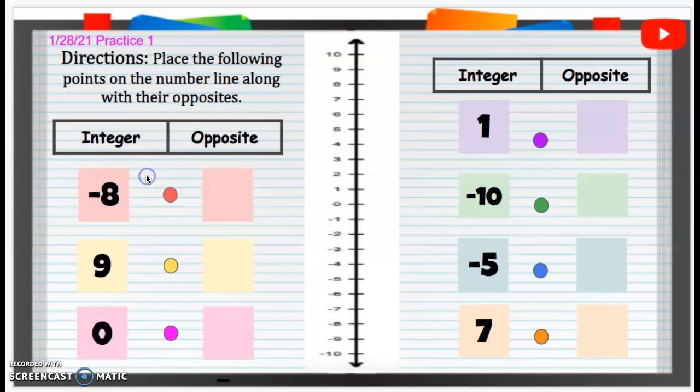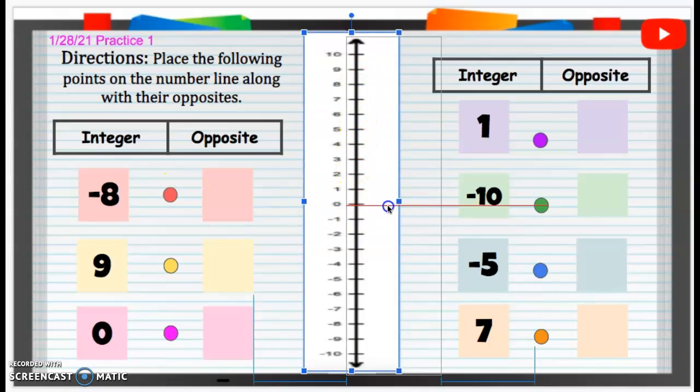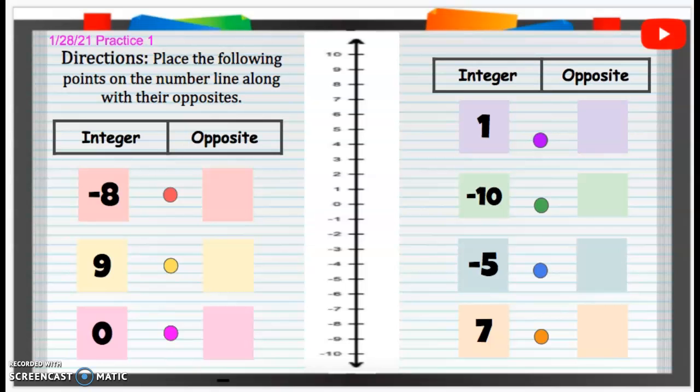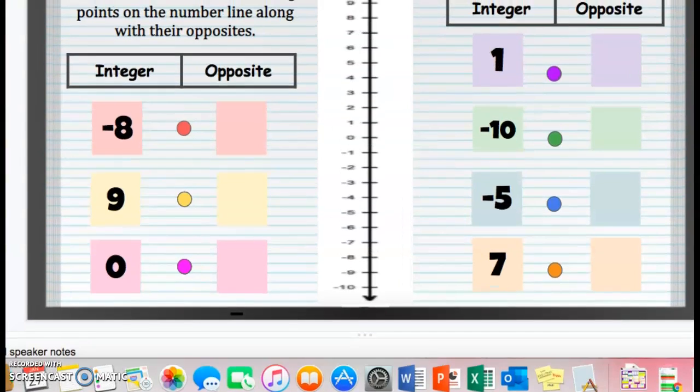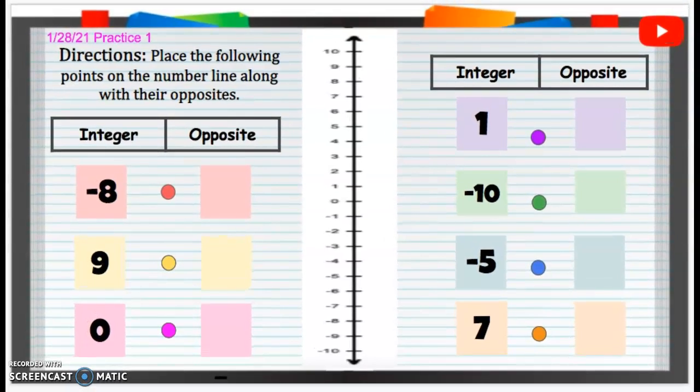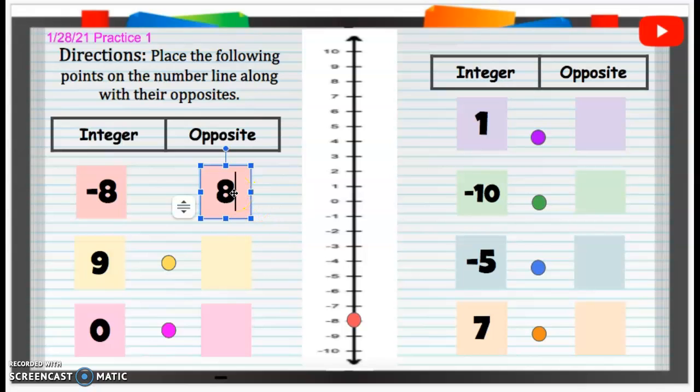So first of all, the integer or the number, we have negative eight. I'm going to look at this number line, and here's zero right in the middle here. There's zero right in the middle there, so we're going to go down. So negative eight, we're going to plot. Here's zero, we're going to go down eight or minus eight away from zero. And then we are going to plot the opposite. So the opposite of negative eight is a positive eight. So I'm going to put that positive eight on the positive eight side.